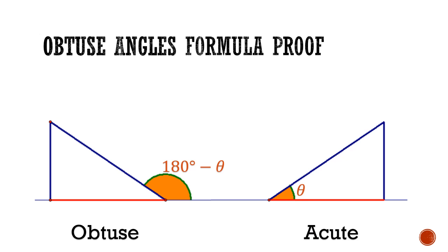So for convenience, I'm going to label the acute one as theta, and the obtuse angle as 180 degrees minus theta. Both of them have the same hypotenuse A, the same opposite side B,